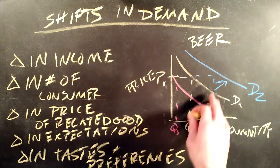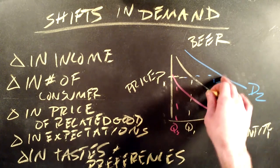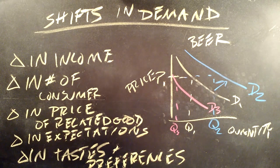So for all these reasons, we're able to shift the demand curve either out towards D2 or in towards D3.